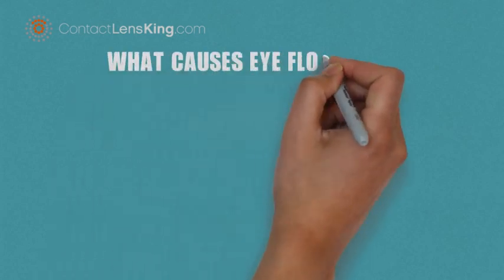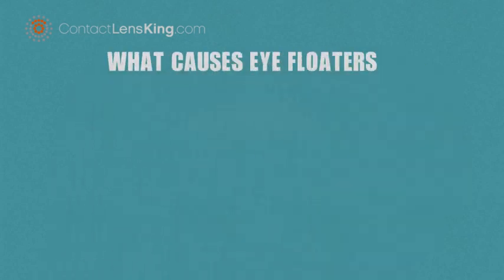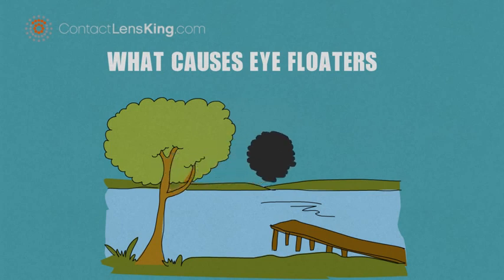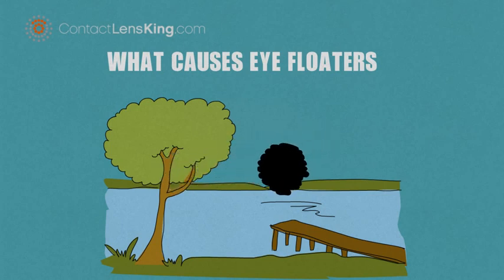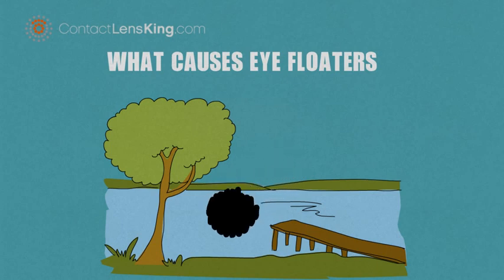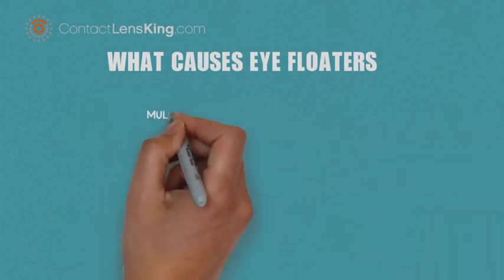What causes eye floaters? Eye floaters resemble black or gray obstructions in your field of vision that simply seem to drift about aimlessly. These floaters can appear on a regular basis, and then disappear for some time, only to reappear again sporadically.